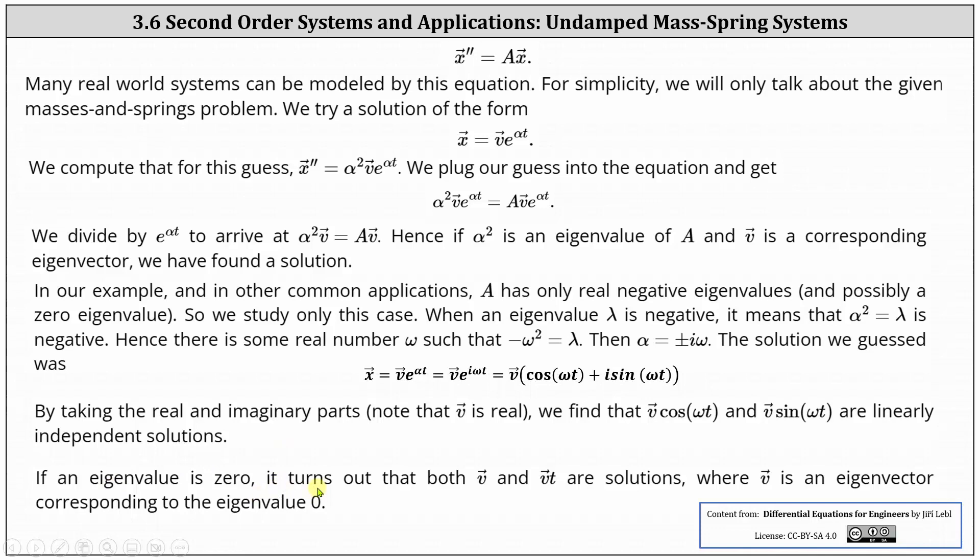If an eigenvalue is zero, it turns out that vector V and vector V times T are solutions, where vector V is an eigenvector corresponding to the eigenvalue zero.